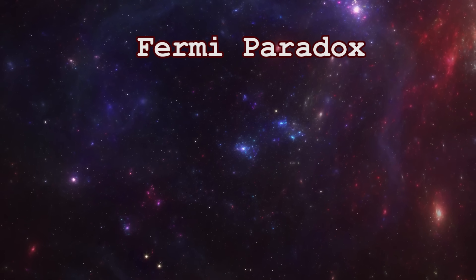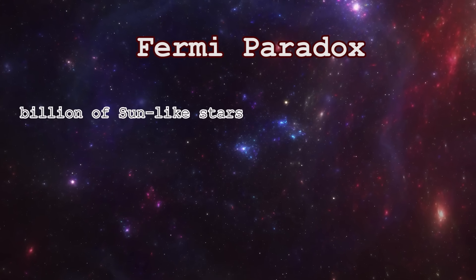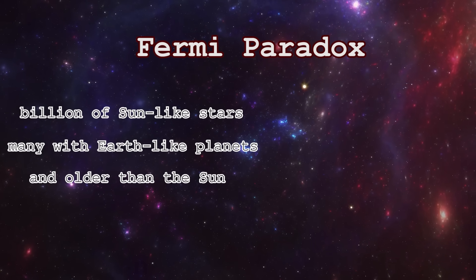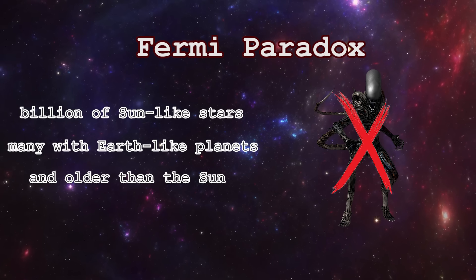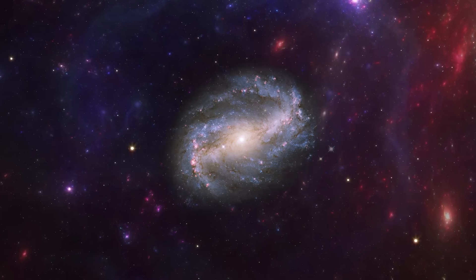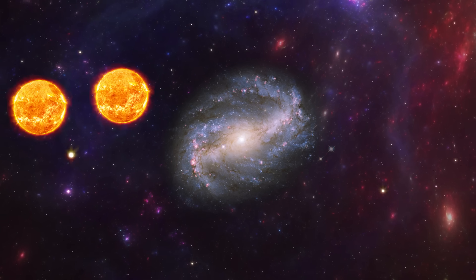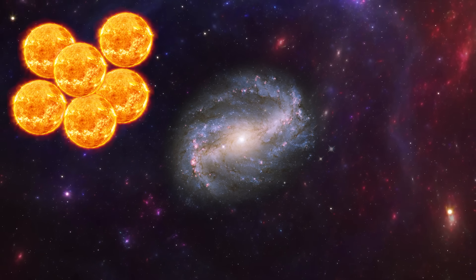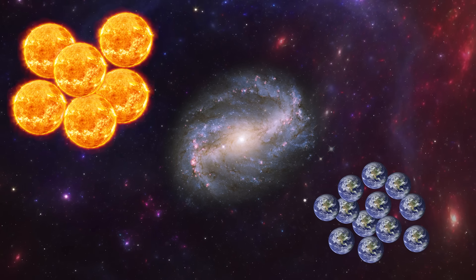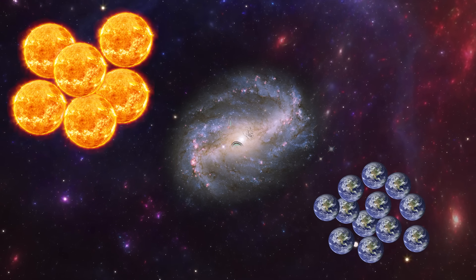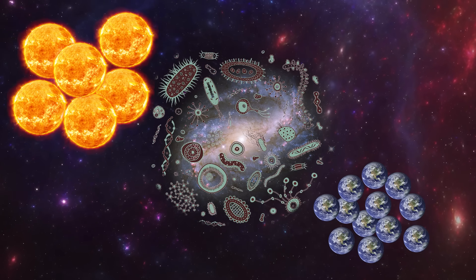The Fermi paradox puts light on the contradiction between the various high probability estimates of the existence of extraterrestrial life and the lack of evidence of aliens. In the Milky Way, there are billions of stars similar to the Sun, many of them having planets similar to Earth in the habitable zone, and thus are very likely to be inhabited by organic life.